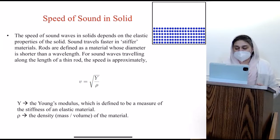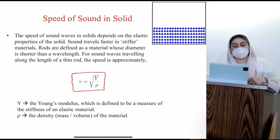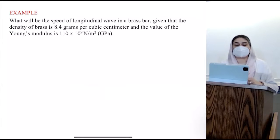We have seen this formula before, but we saw it with an E. I just wanted you to see it with also a Y. It's the same exact formula. So sound waves traveling in a thin rod will be given by this formula, where Y is the Young's modulus and rho is the density, which is mass per unit volume. And I did say there was going to be another question, which is this one. So this question says, what will be the speed of a longitudinal wave in a brass bar, given that the density of brass is 8.4 grams per cubic centimeter and the value of the Young's modulus is 110 times 10 to the 9 newtons per meter squared.